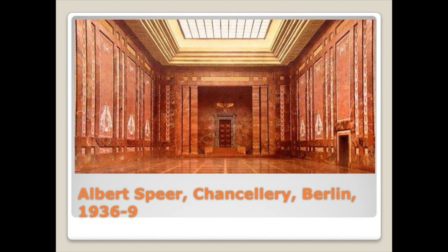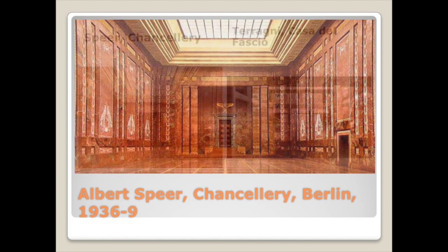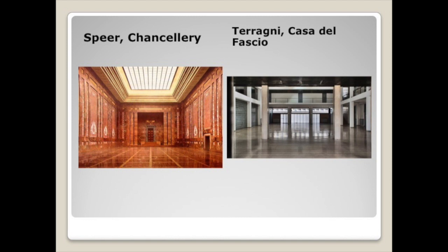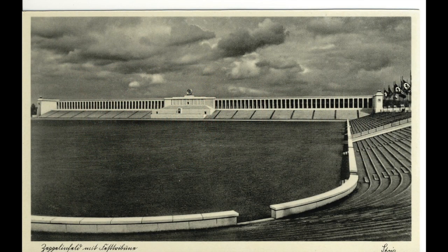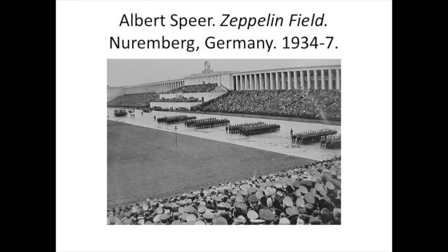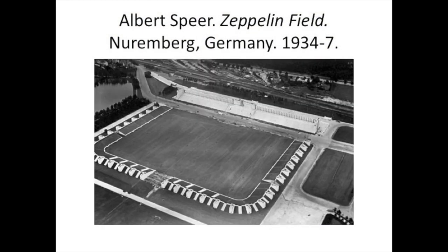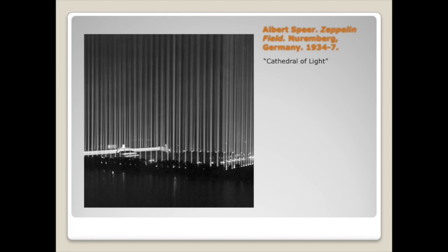Speer's design for the Chancellery — note that 1936–39 is before World War II actually started — is opulent but refined, with a lot of the symbols of power. I'm going to ask you to compare designs by Speer to Terragni, looking at the interiors of the Chancellery versus the interior of Casa del Fascio. Design was also put to nefarious purpose at the Zeppelin field, where light, pageantry, scale, and repetition all served the interests of the Nazi program.